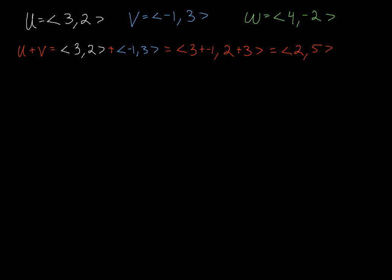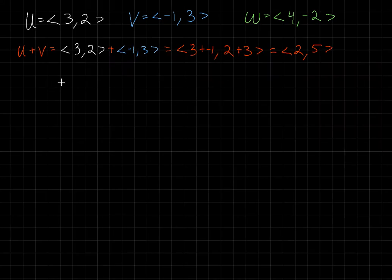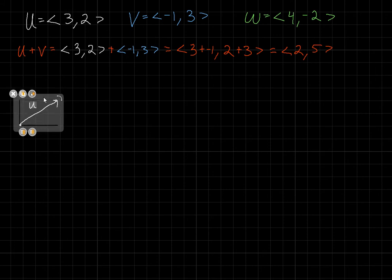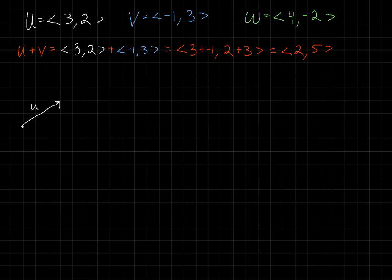You can do this algebraically, but because I've got this graph paper here, let's go ahead and do it graphically as well. I'm going to start by drawing out u. u travels 3 to the right and 2 up. It does not matter where you move these vectors to, as long as your initial and terminal points are 3 to the right and 2 up. Now I need to draw v — it goes 1 to the left and 3 up.